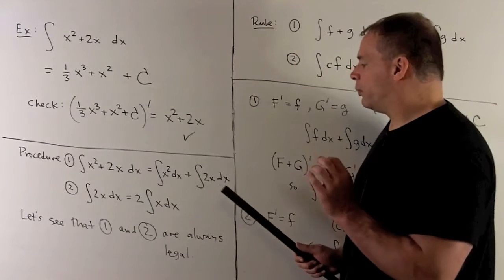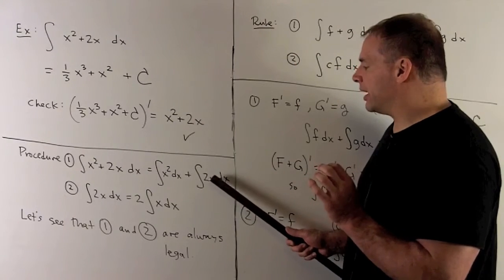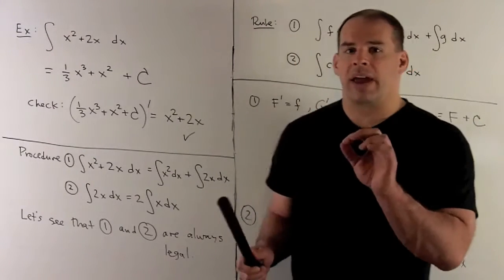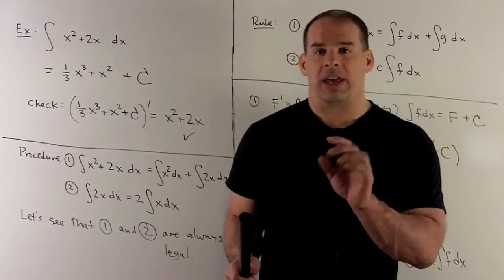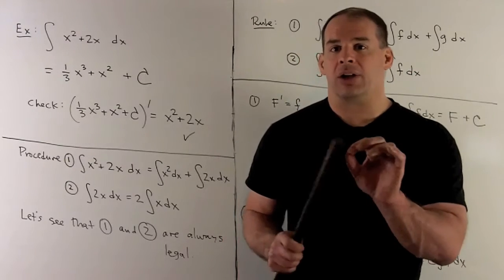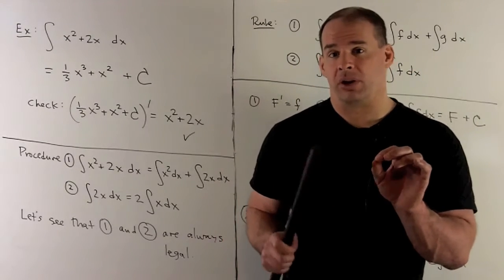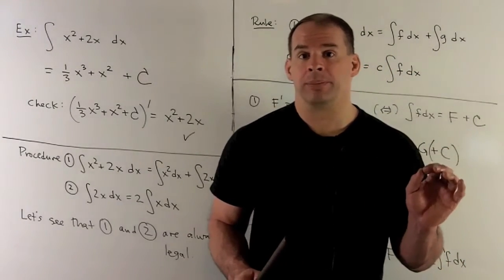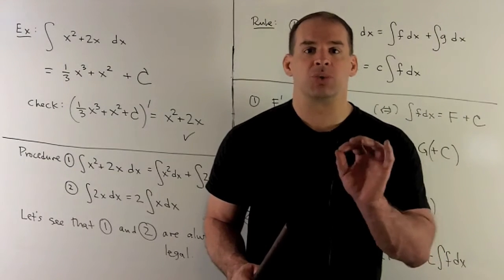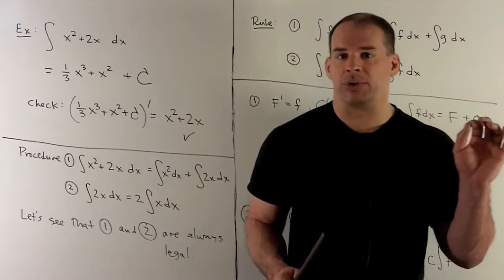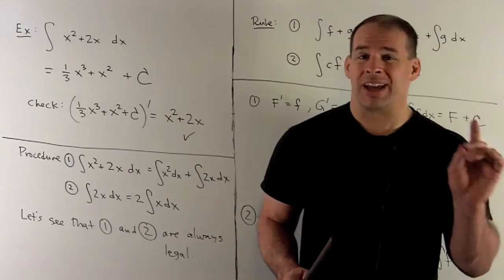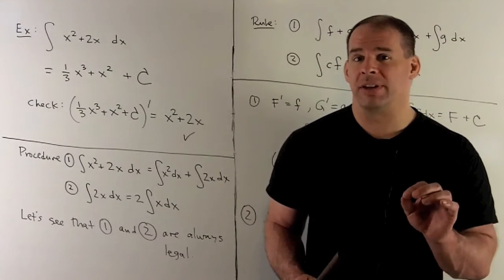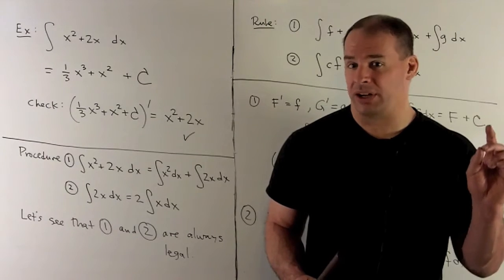If we have numbers on the inside — scalars — we're allowed to ignore them, meaning you work out your indefinite integral without the scalar and then put it back in when you're done. These rules you use all the time with derivatives, and they're also going to hold for indefinite integrals.